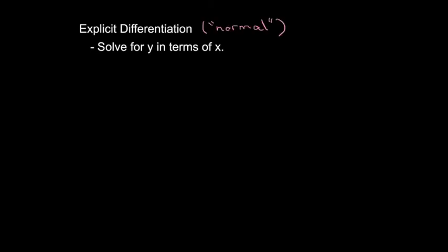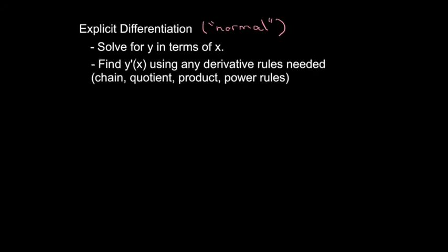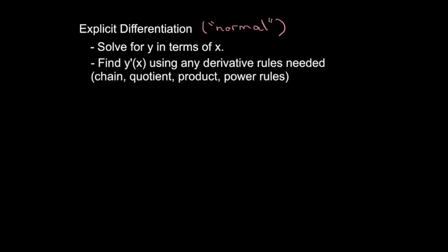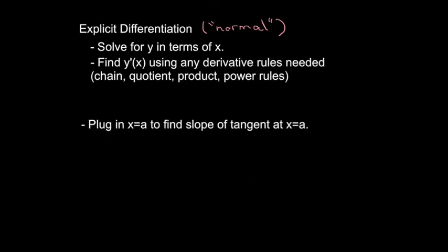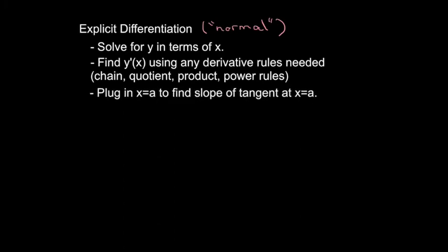Let's review the steps for each type of differentiation. For explicit differentiation, the first step is to have y as a function of x, then take the derivative as usual using any derivative rules covered in class. If you're looking for the slope at x equals a, just plug in x equals a.